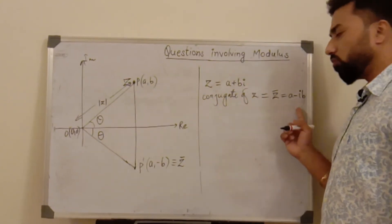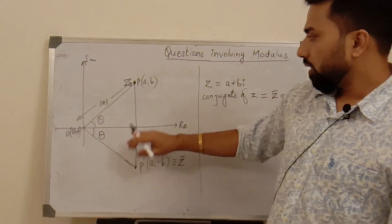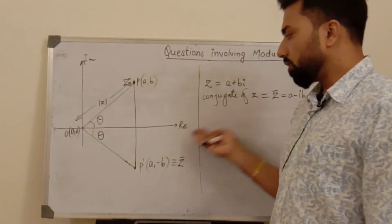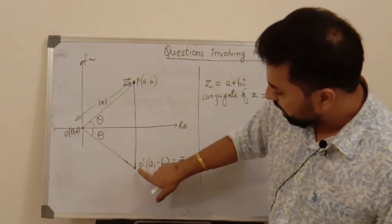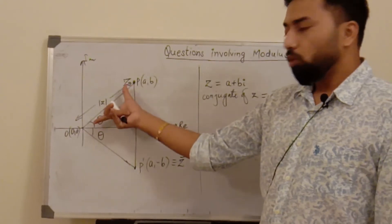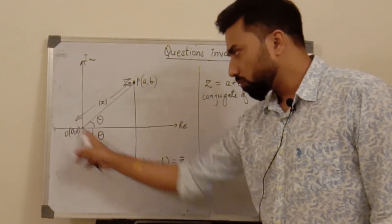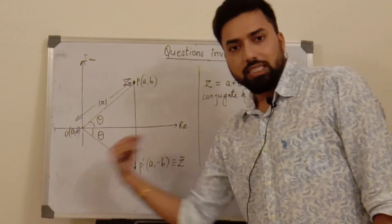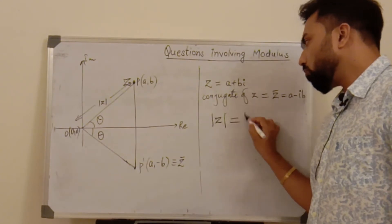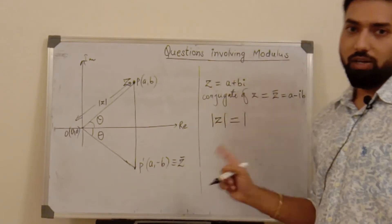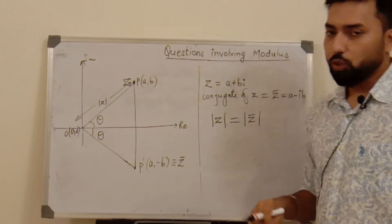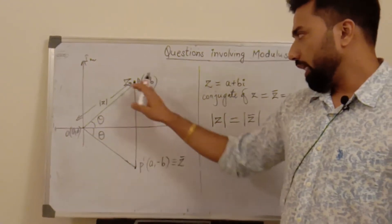The original complex number z was a + ib, and its conjugate z-bar is a − ib. The significance of the conjugate is that it is the image of the given complex number reflected about the real axis. We can see that the distance of point P from origin and the distance of point P' from origin are both the same, so |z| = |z-bar|.